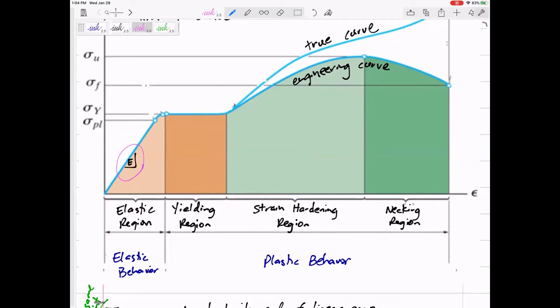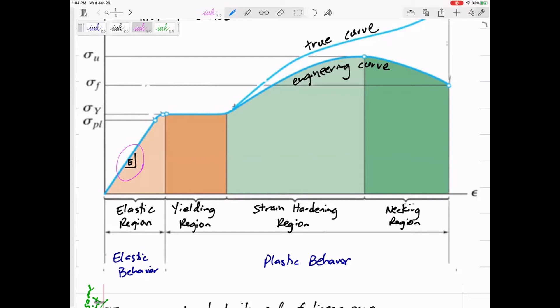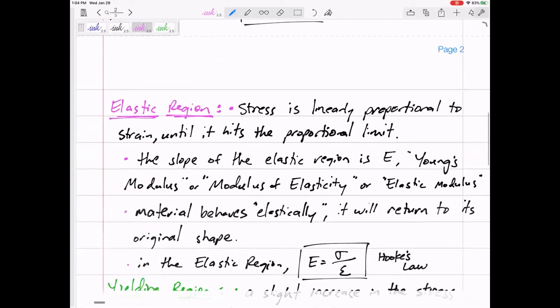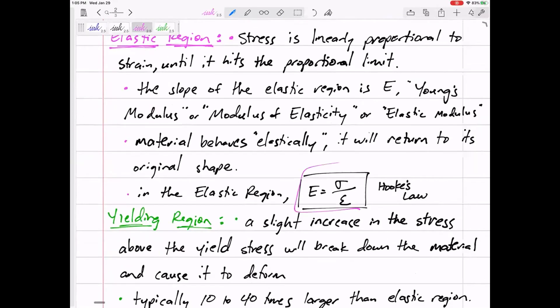The slope of the elastic region is E. If you know the slope of that—and different materials, the E will be listed in the back of the book, you know, this type of aluminum has an E of 200 GPa or something. So if you know that E and you're in the elastic region, right here, E is stress over strain.